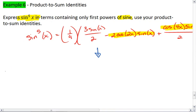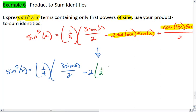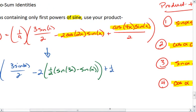This is what we get. We now have that sine to the 5th x equals 1/4, 3 sine x over 2, that's fine, minus 2, and now I'm going to replace this with 1/2 sine 3x minus sine of x. Plus 1/2, there we go, times 1/2 sine 5x minus sine of 3x.